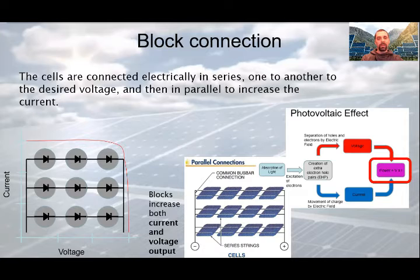We need to use both connection types. First, the cells are connected electrically in series, one to another to reach the desired voltage. Here on the drawing, four cells are connected in series. And then, these three series are connected parallel to increase the current.